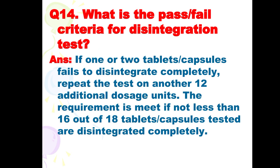Next is: what is the pass or fail criteria for the disintegration test? The answer is: if one or two tablets or capsules fail to disintegrate completely, repeat the test on another 12 additional dosage units. The requirement is that not less than 16 out of 18 tablets or capsules tested are disintegrated completely.